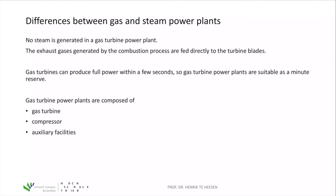You just need the gas turbine, a compressor, and some auxiliary facilities. A gas power plant is not that complicated compared to a steam power plant, where you have a boiler and the water-steam circle in the machine house with the generator, etc.